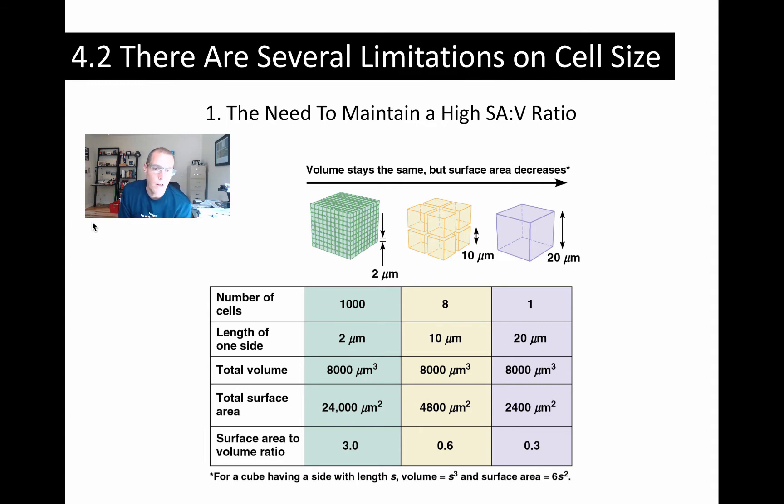So in the table here, you can see how cells can overcome this. On the right here, we've got a 20 micrometer cuboidal cell. We're thinking about that as one cell, 20 micrometers of length of one side, volume 8,000 cubic micrometers, and the surface area 2,400 square micrometers. And then surface area to volume ratio, if you calculate this out, is about 0.3.